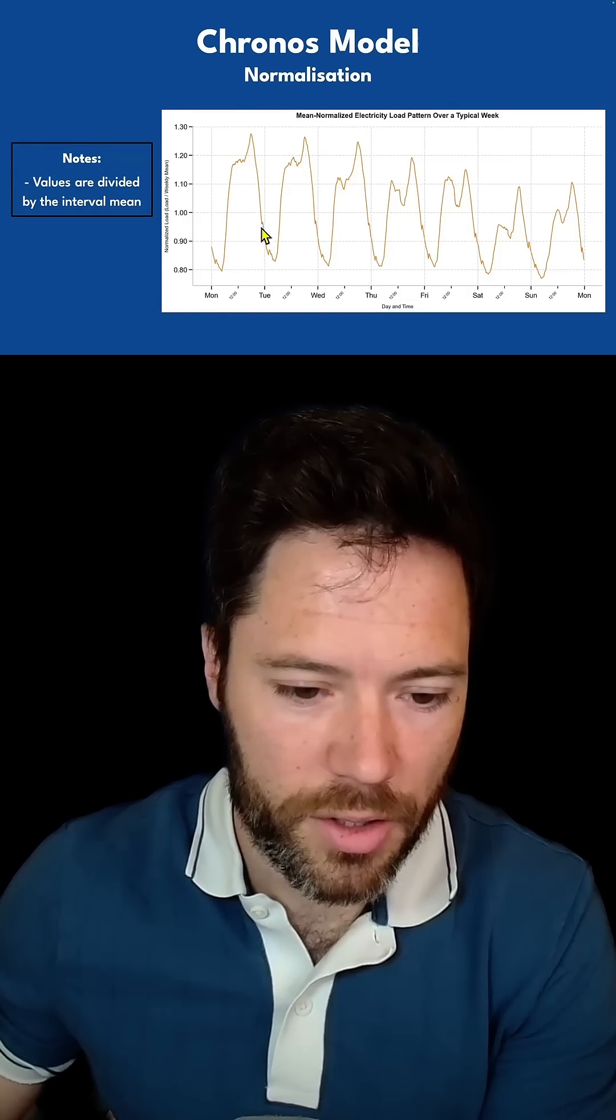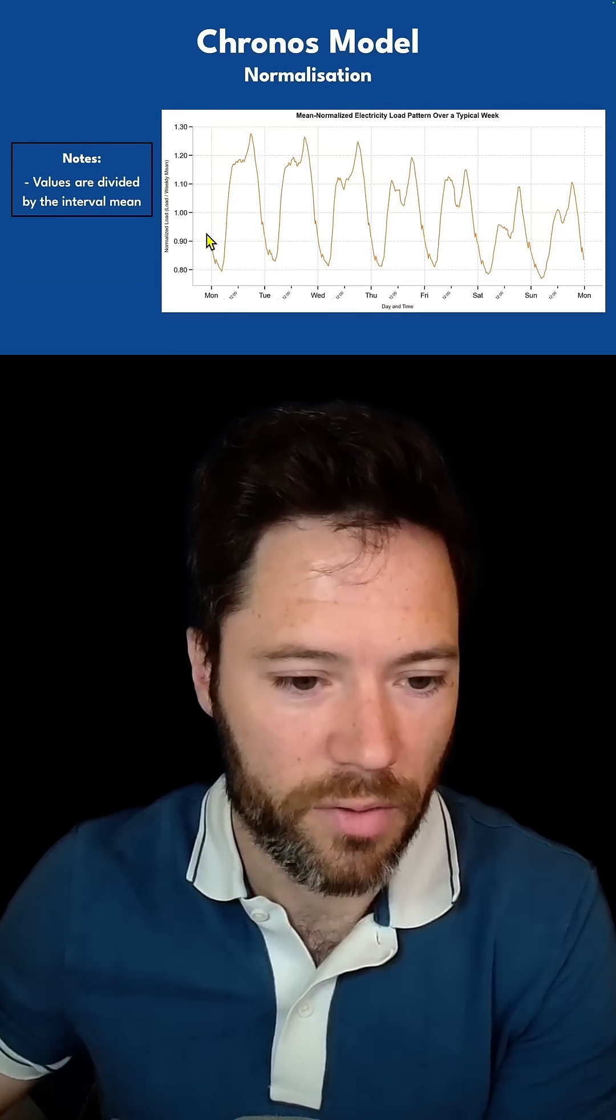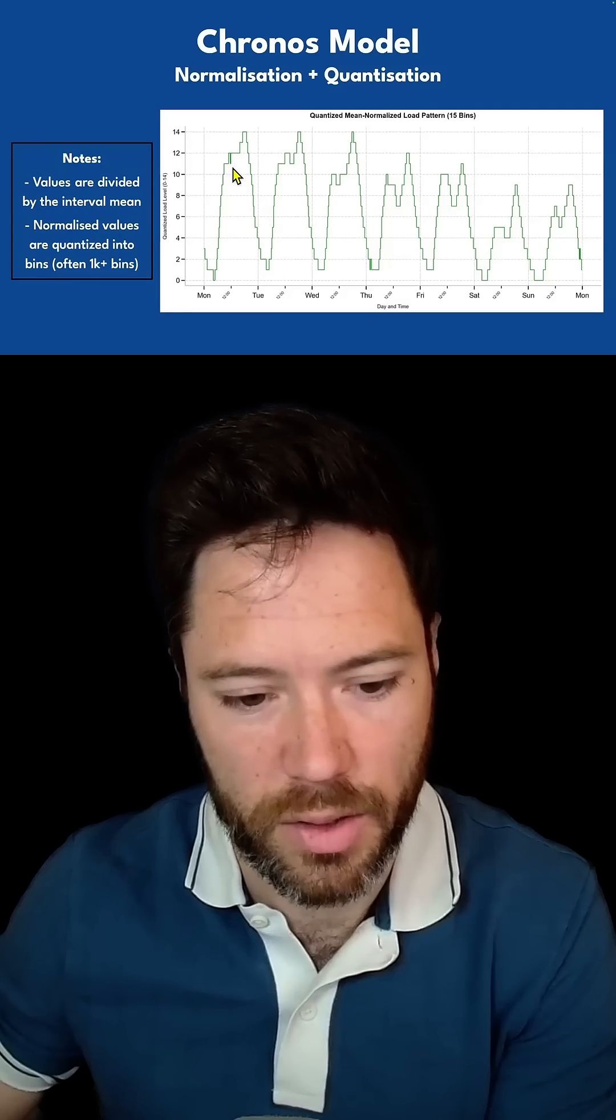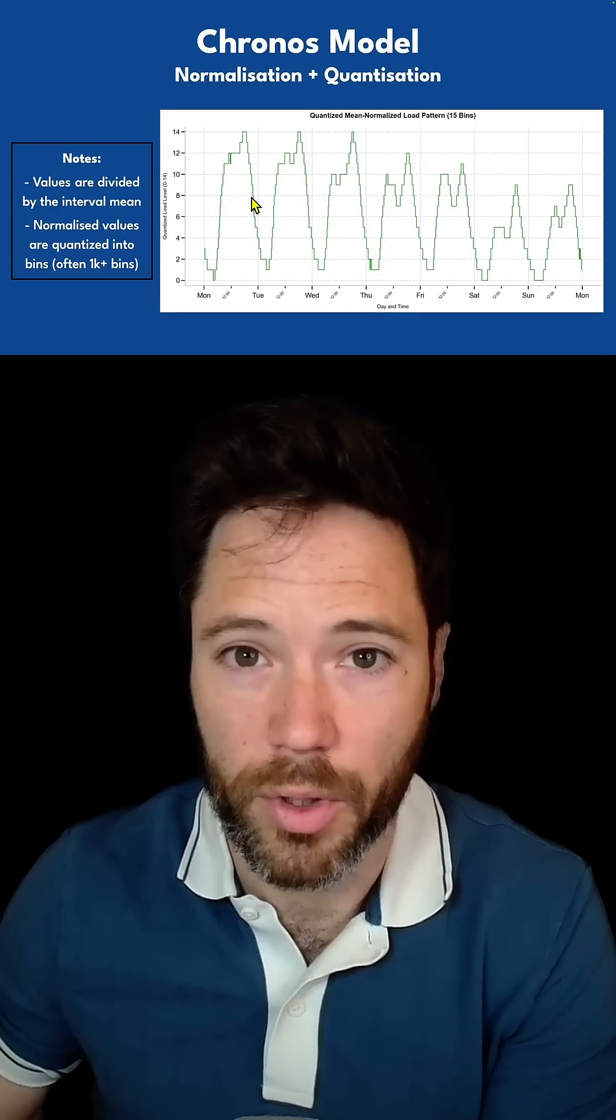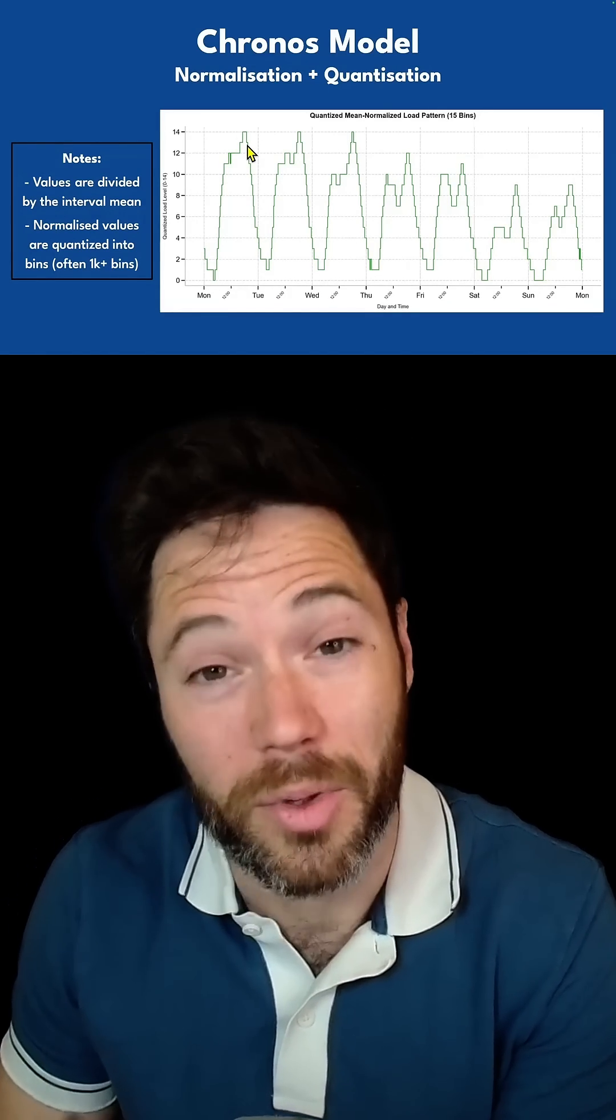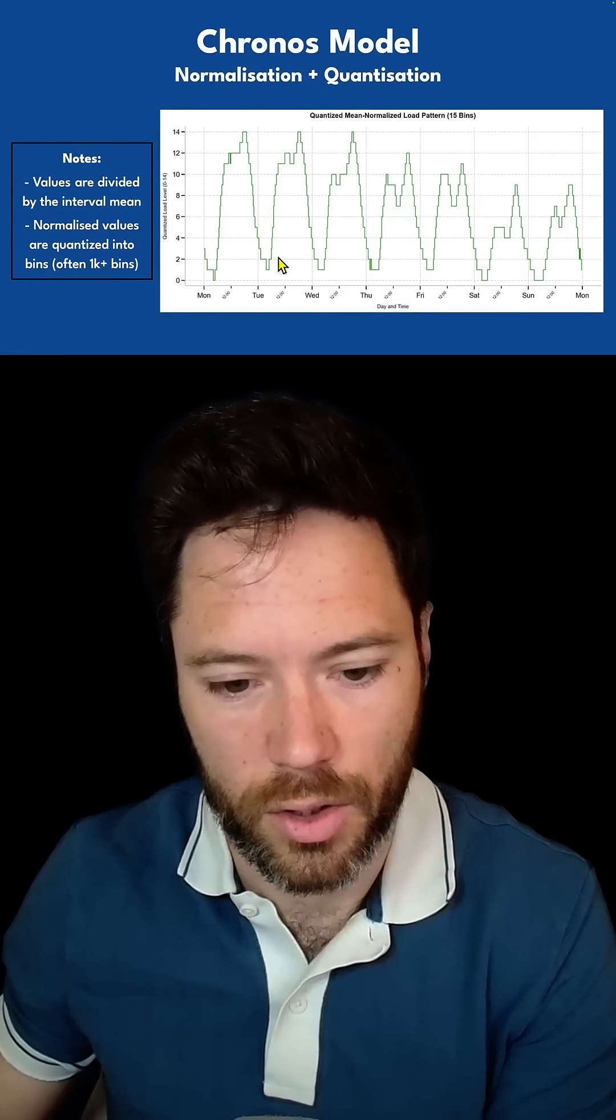After normalization, we then quantize. This involves splitting the values into a number of buckets. Here I've split them into 15 buckets from 0 to 14. With this amount of buckets it looks jagged, which is good for illustration purposes, but in practice you would use many more buckets, often more than 1000, so that this looks smooth.